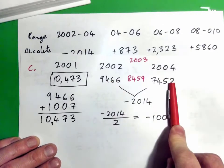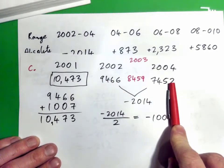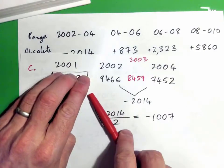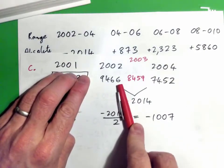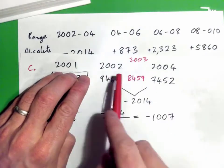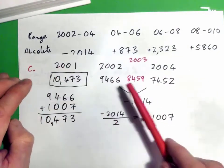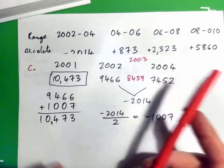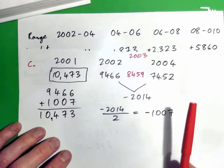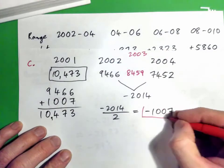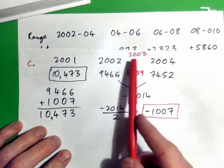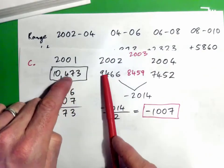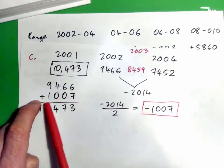It dropped from 2002 to 2004, so back in 2001 it must have been more. Every year on average it's dropping by 1,007, so a year ago it would have been 1,007 more — that's why we added it on. So 10,473 is our estimate for 2001.